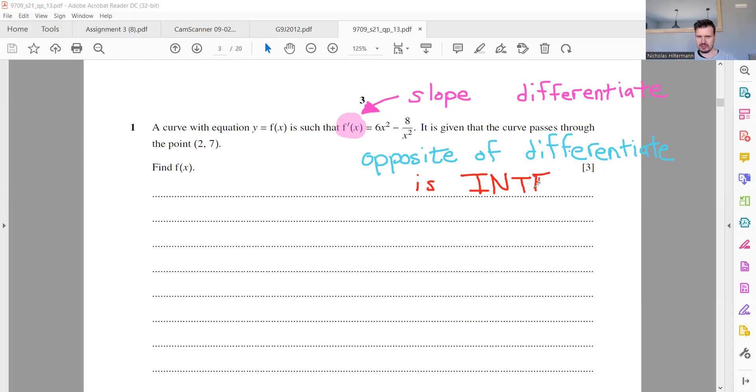Okay, so remember, when we want to find the slope, we differentiate, the opposite of differentiate is integrate. So this is what we need to do in this question. Because they want us to find f of x. Okay, so what I want you to do now is to actually go ahead of me and start doing it yourself, if you already know. So start doing it, and hopefully, at the end of it, we'll get the same answer.